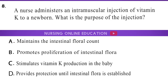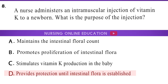Question 8. A nurse administers an intramuscular injection of vitamin K to a newborn. What is the purpose of the injection? A. Maintains the intestinal flora count. B. Promotes proliferation of intestinal flora. C. Stimulates vitamin K production in the baby. D. Provides protection until intestinal flora is established. The answer is option D: Provides protection until intestinal flora is established.